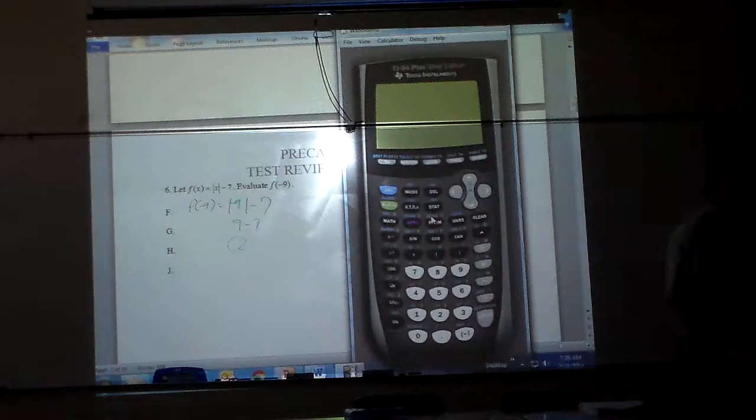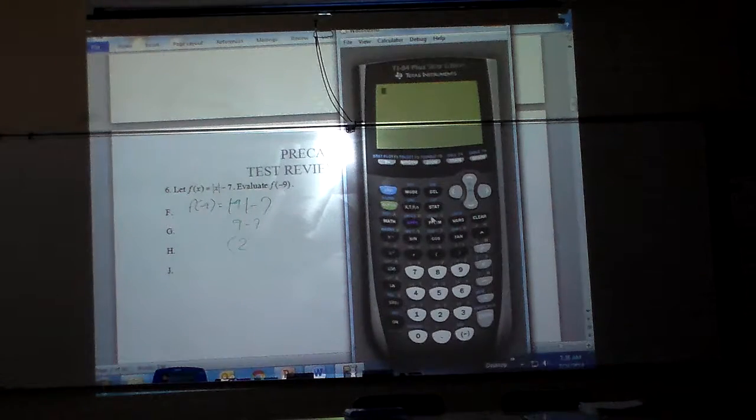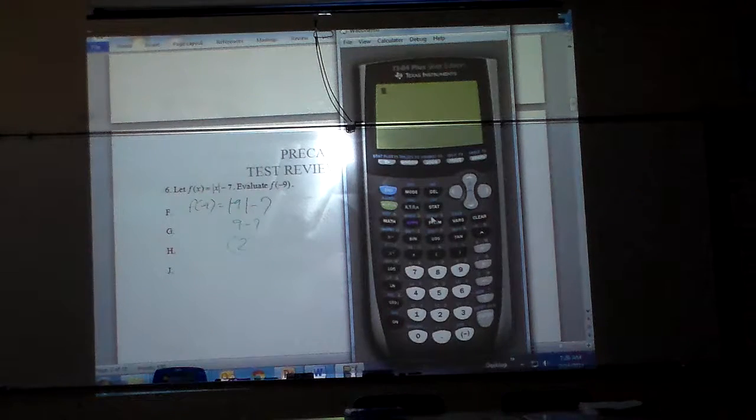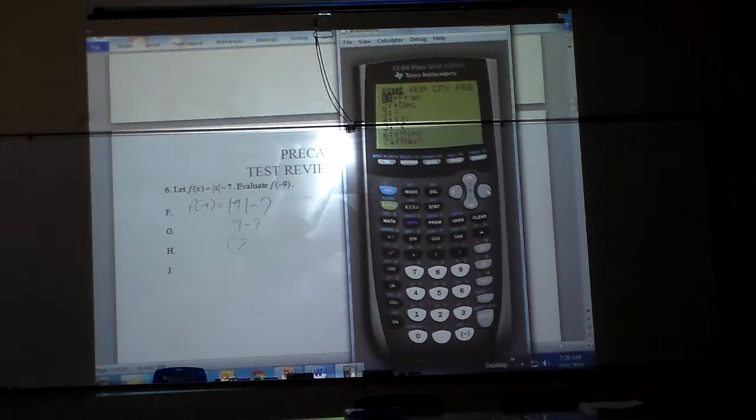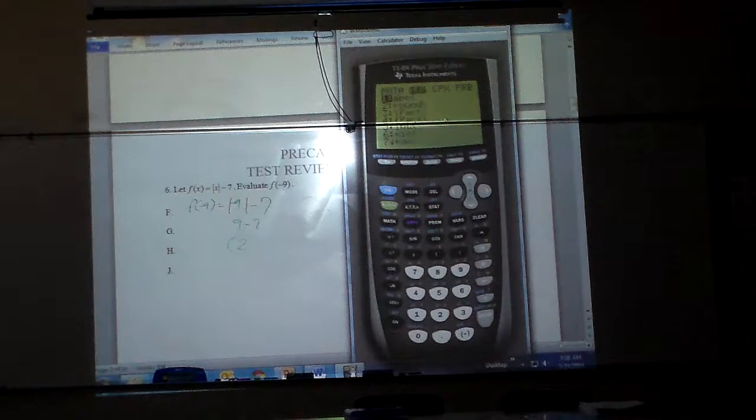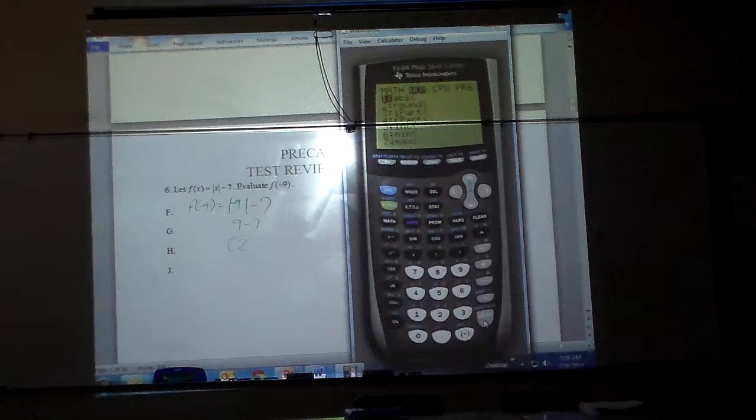I'm going to show you how you can do that on your calculator. You can see that calculator right up there. So I can go to my math button, and I have to arrow over right up here to numerals, number. And option 1, I can hit 1, or I can just hit enter.